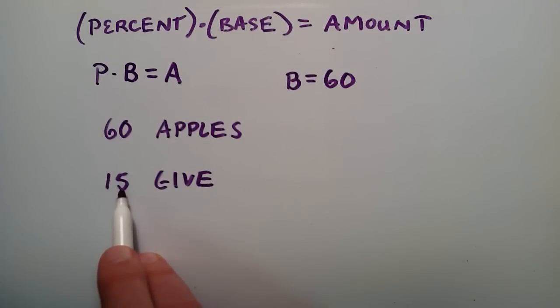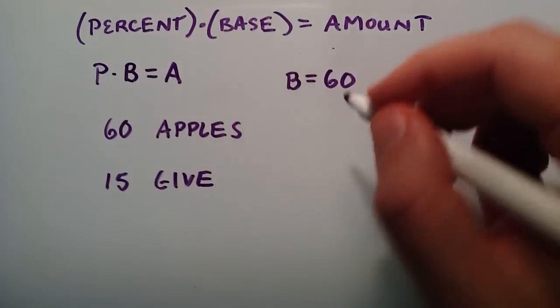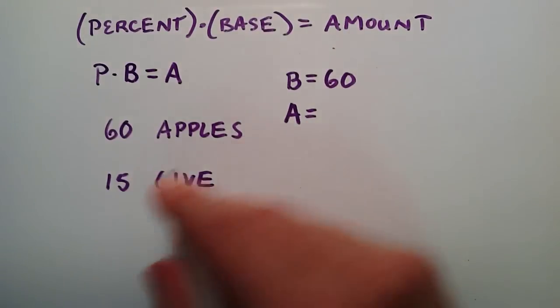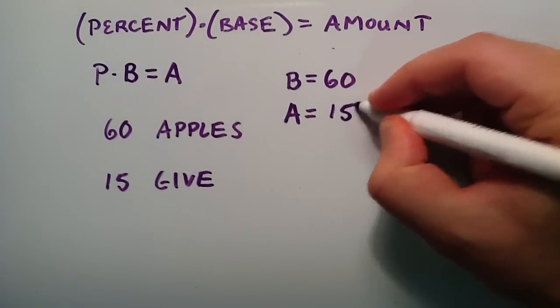And 15 is the amount that we give, the amount that we give away. So we're going to put A for amount, and A is equal to 15, the amount we gave away.